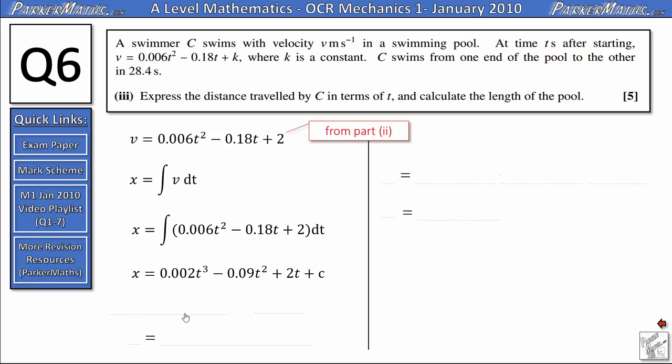To find the value of c we're going to use the fact that at t equals 0 the swimmer is at the starting position, so x equals 0, and if I substituted 0 in for all these t's everything would disappear on the right-hand side apart from the c. So we would get 0 equals c or c equals 0. So our final expression for our displacement is x equals 0.002t cubed minus 0.09t squared plus 2t.